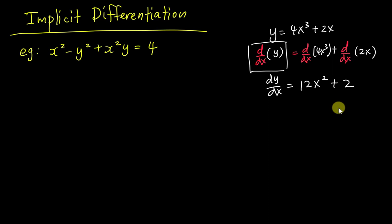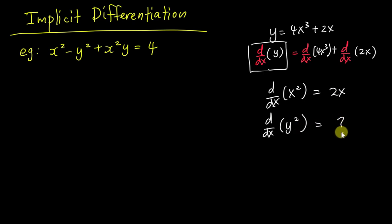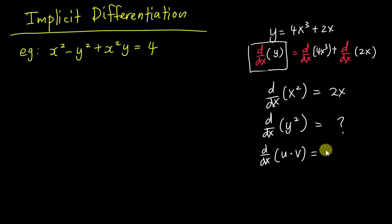Now, how do we actually differentiate? If you do d/dx of x squared, everyone knows that gives 2x. But what if we do d/dx of y squared? I love to use the product rule to explain this. The product rule tells us that if we differentiate u times v, we get u·dv/dx plus v·du/dx.